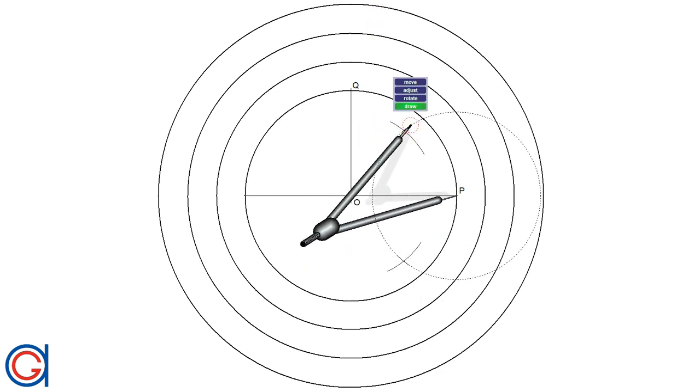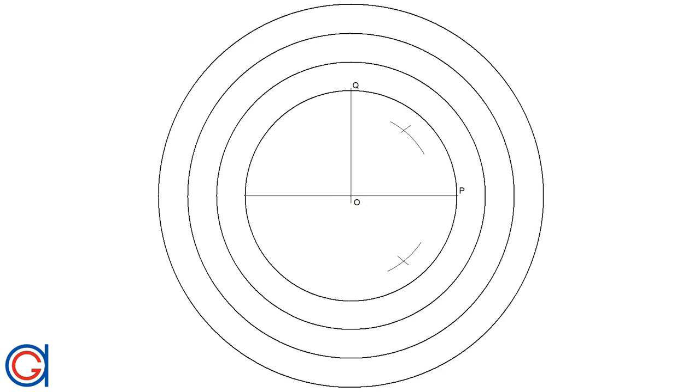And now we will join these two points. Where it cuts the radius OP, this will be the midpoint M of the radius, as can be seen here.